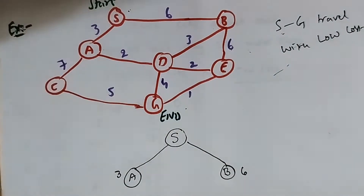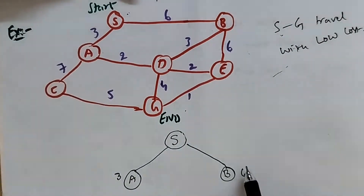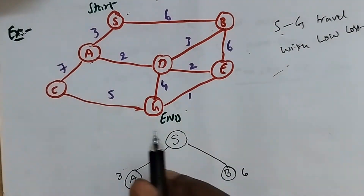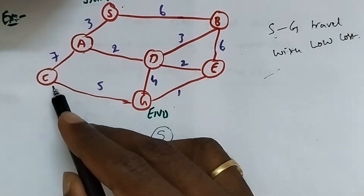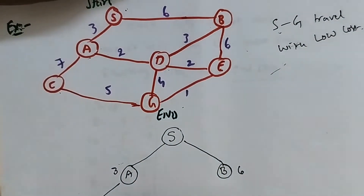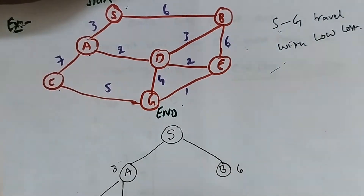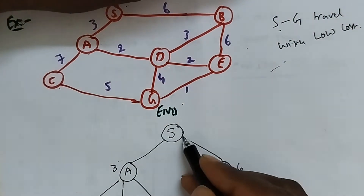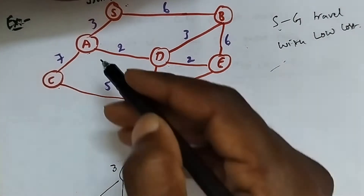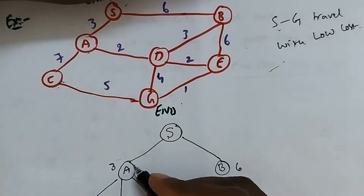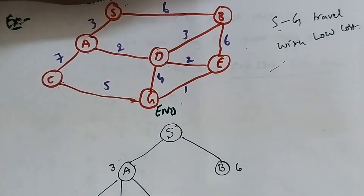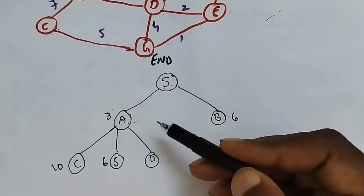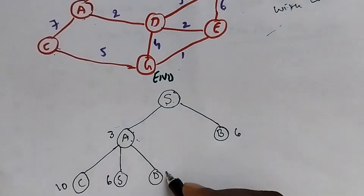S has two possibilities: A and B. From S to A the weight is 3, and from S to B the weight is 6. The least is 3, so we extend A. From A we have possibilities: A to C (cost 10), A to S (cost 6), and A to D (weight 2, total cost 5).